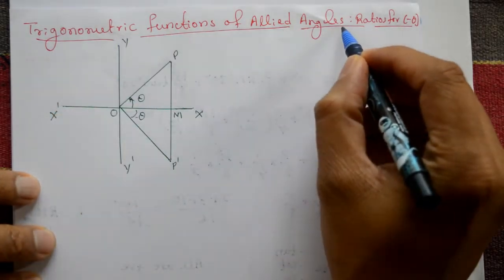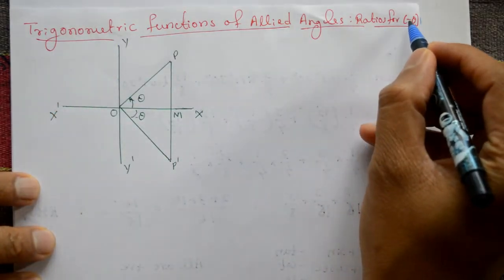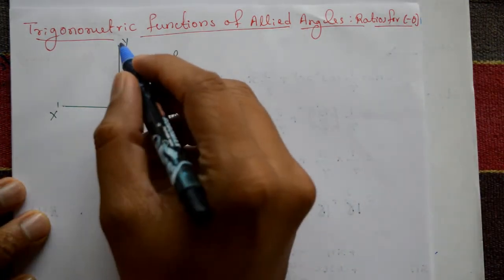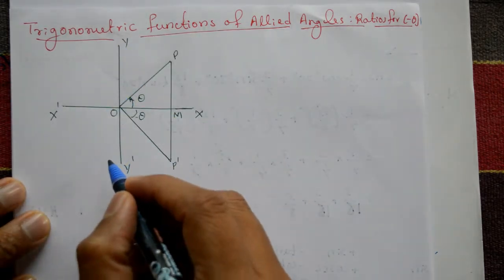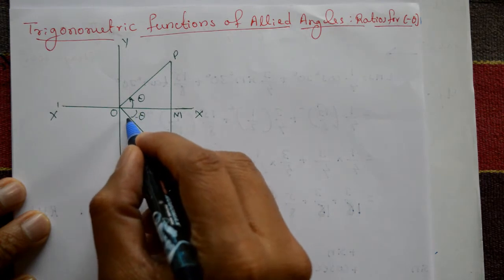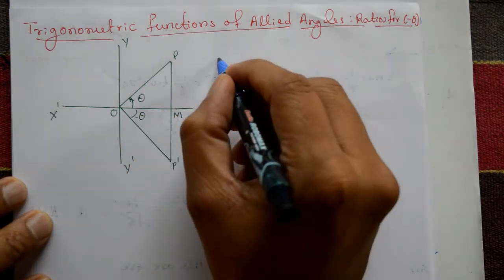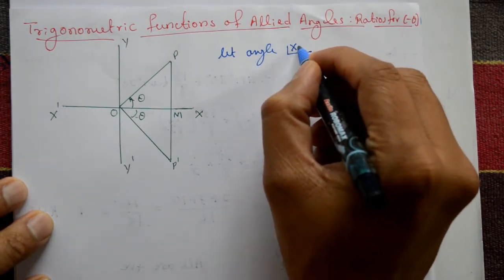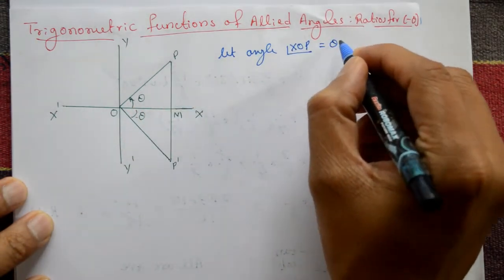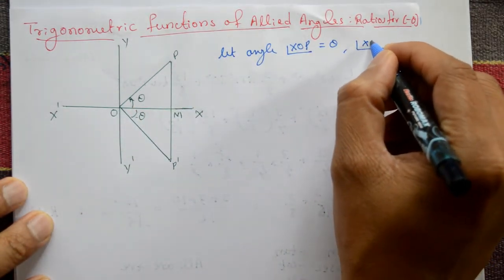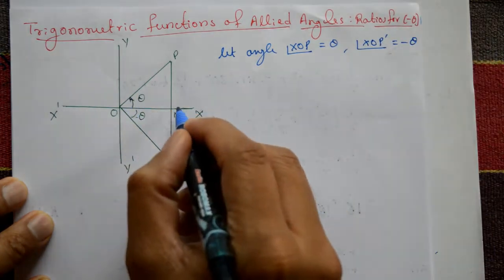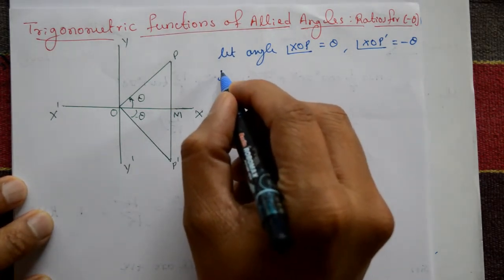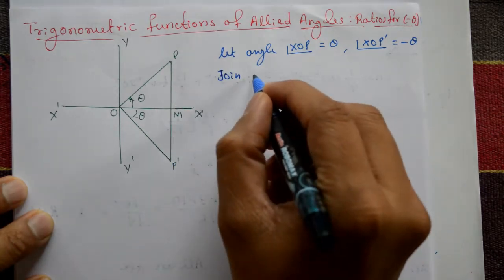Trigonometric functions of allied angles — ratios for minus theta. We have the x-axis and y-axis. The angle theta is marked as angle XOP, and angle XOP dash is equal to minus theta. This angle is plus theta and this angle is minus theta.